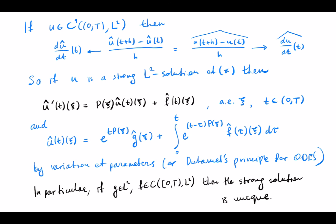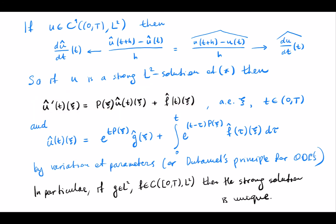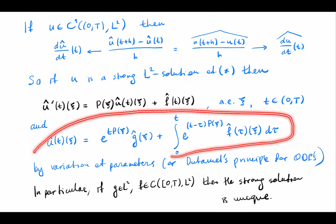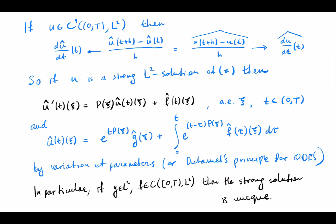Because of this commutation, if u is a strong L^2 solution of our initial value problem, you can also write the equation in Fourier space. This equation is just an ODE for each fixed xi, and we can solve that ODE by using variation of parameters — also called Duhamel's principle for ODEs — since it is a linear equation with an inhomogeneous source term.